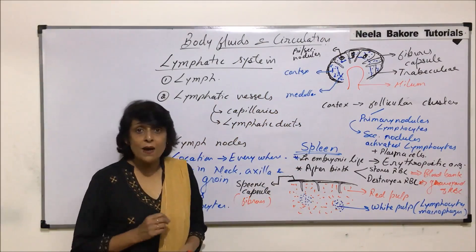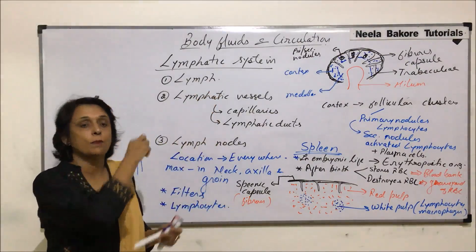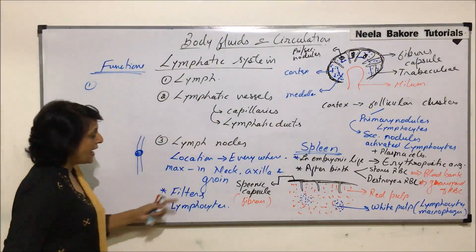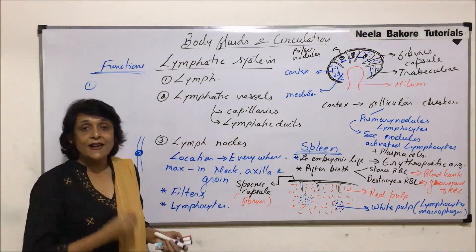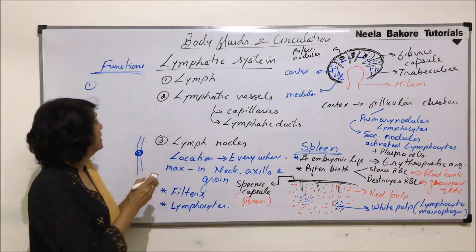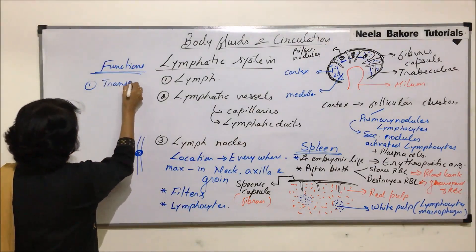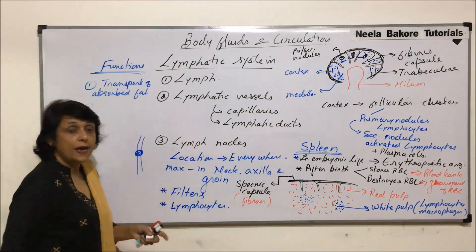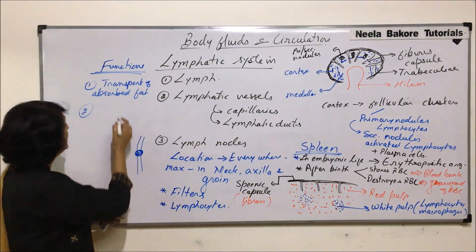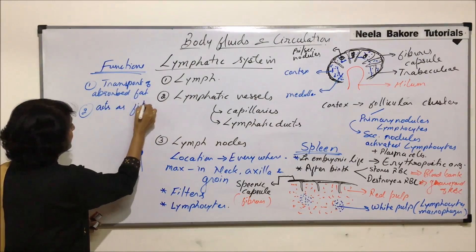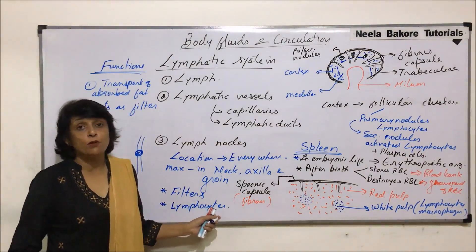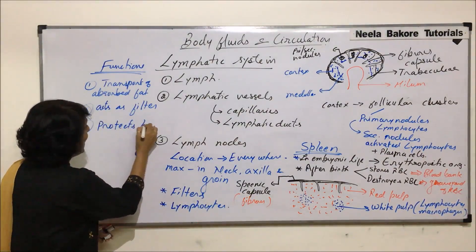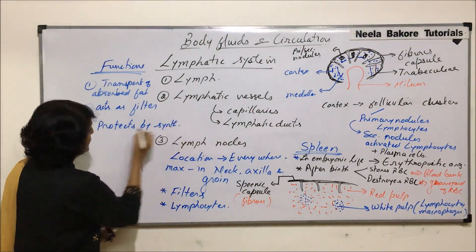Now let us sum up the functions of the lymphatic system. Number one, the lymphatic capillary called the lacteal helps in the transport of absorbed fat. Number two, it acts as a filter — it removes harmful things like toxic substances and pathogens. Number three, it protects our body by producing and synthesizing lymphocytes, acting as a defense mechanism.